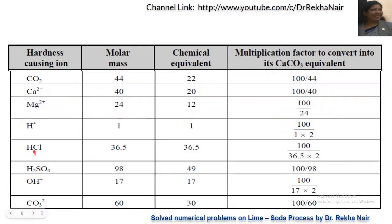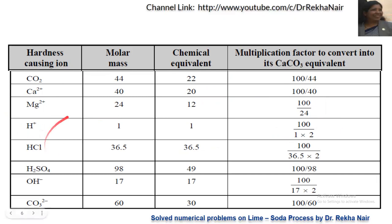To summarize: compounds with valency 2 have multiplication factor = 100 ÷ molecular weight. Compounds with valency 1 have multiplication factor = 100 ÷ (molecular weight × 2). For example, H⁺ gives 100/(1×2) = 50; HCl (MW=36.5, valency 1) gives 100/(36.5×2); H₂SO₄ (valency 2) gives 100/98. The only exception is aluminum sulfate: 100/114.